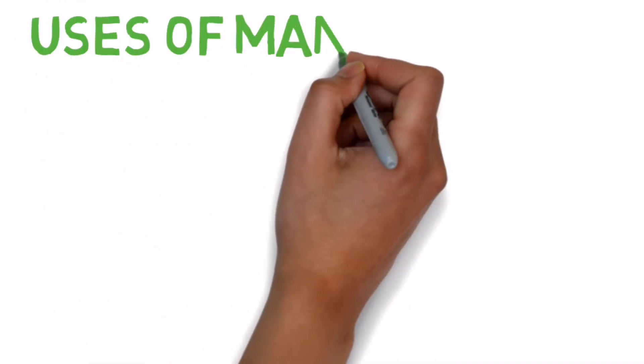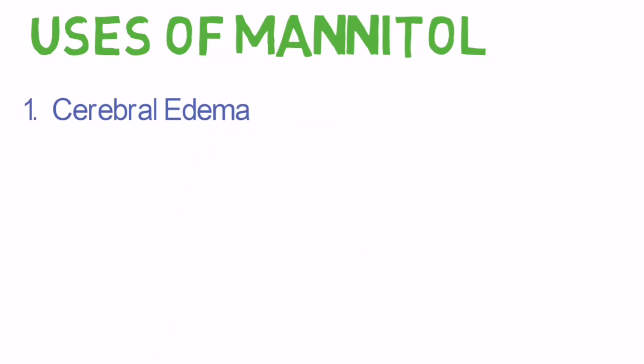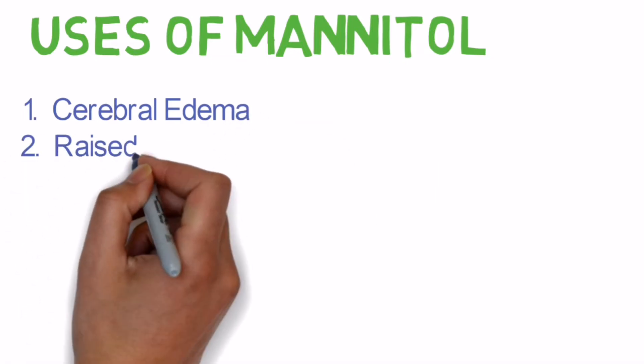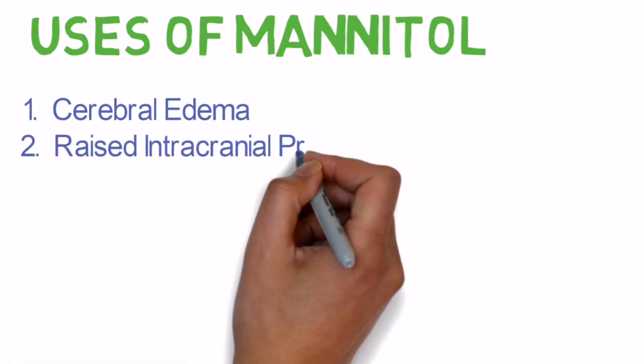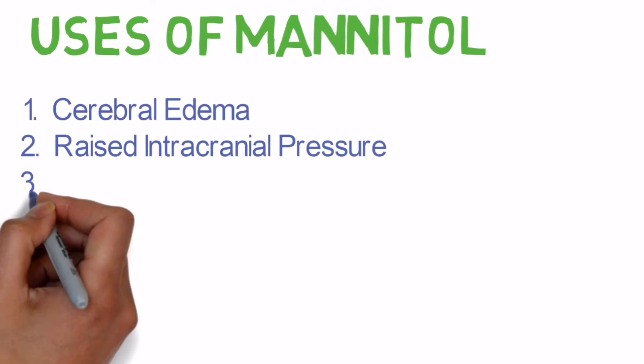Uses of mannitol: Number one is cerebral edema, and number two is raised intracranial pressure. While passing through the vessels in the brain, due to osmotic effects, mannitol draws water from the brain substance and relieves edema as well as intracranial tension. The water then travels with the mannitol to the kidneys where it gets excreted in the urine.